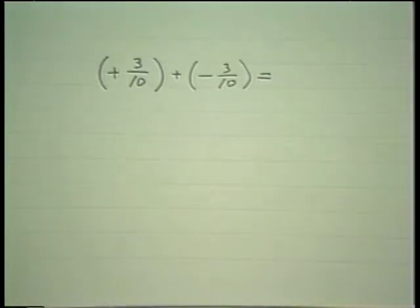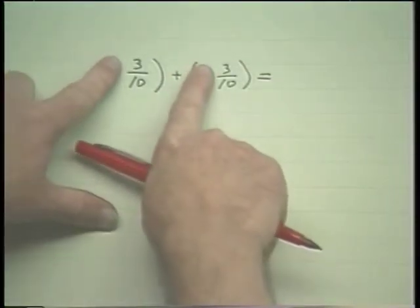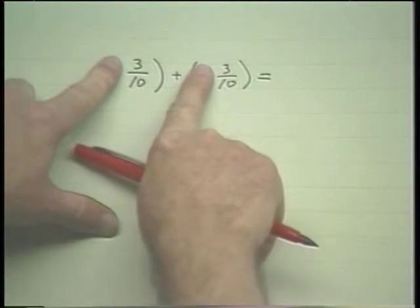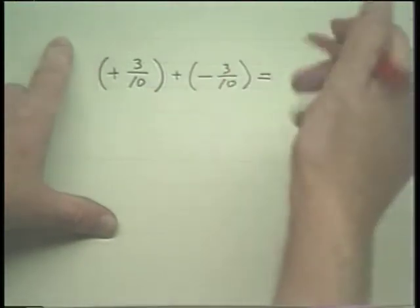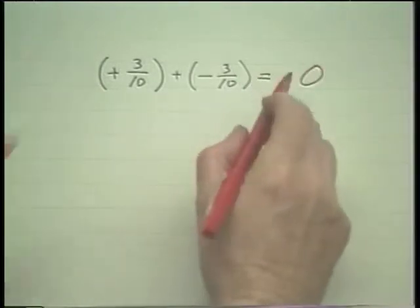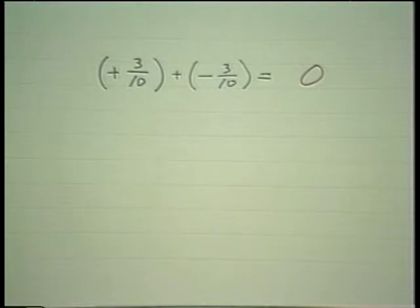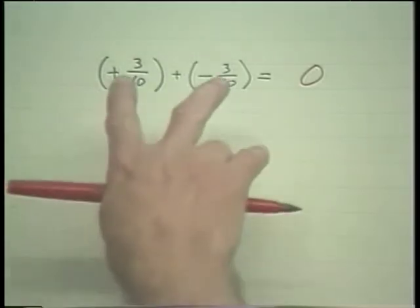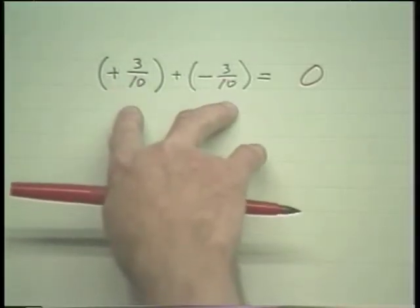On the other hand, if you're adding unlike signs, you're going to take the difference smaller from the larger. In this case, they're both the same size, and the difference is zero. And calling it plus or minus is irrelevant — zero has no sign. So we've got a rather peculiar situation here.